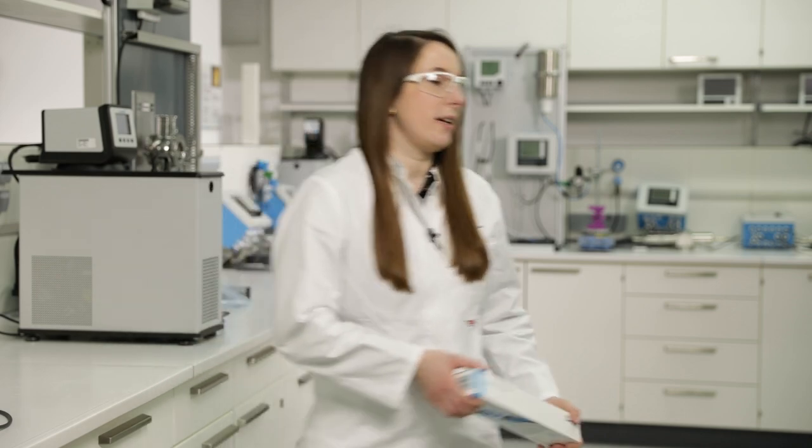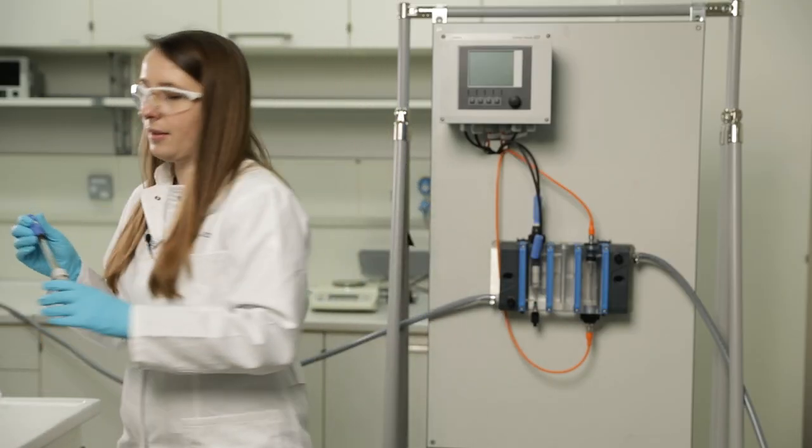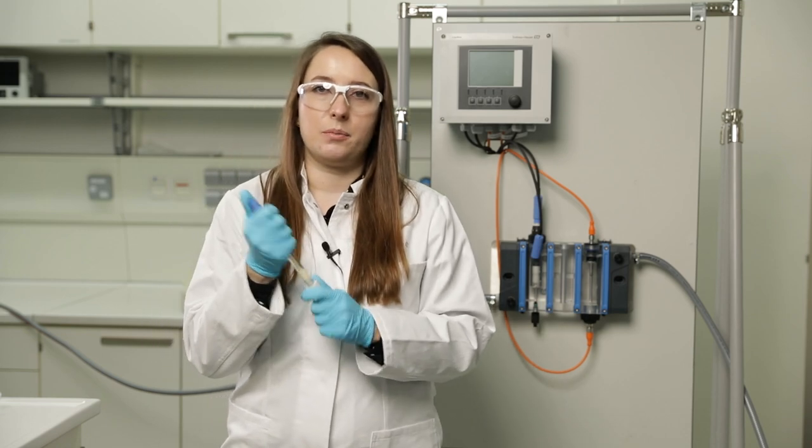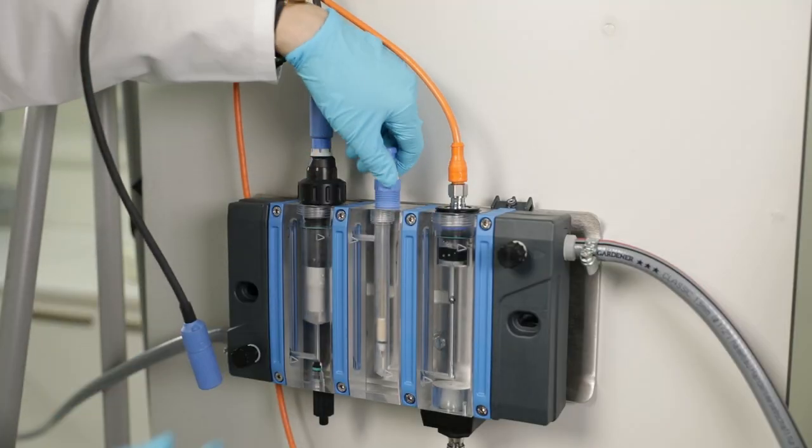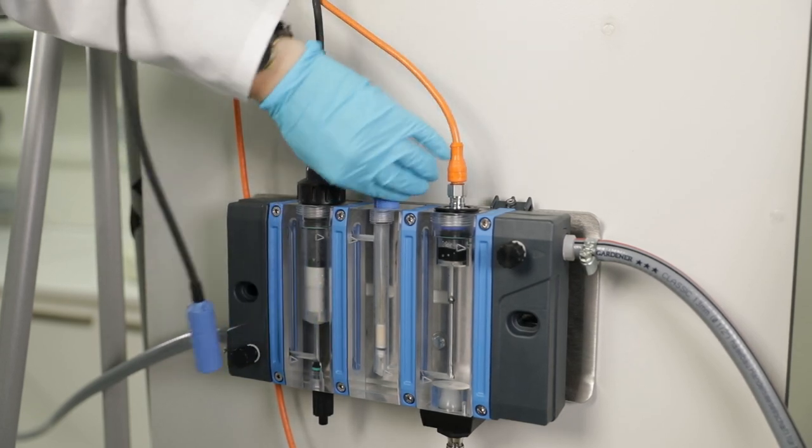For the second step, you have to go on-site. Take the sensor, remove the KCL cap, mount it into its assembly, and connect the Memosense measuring cable to the sensor.